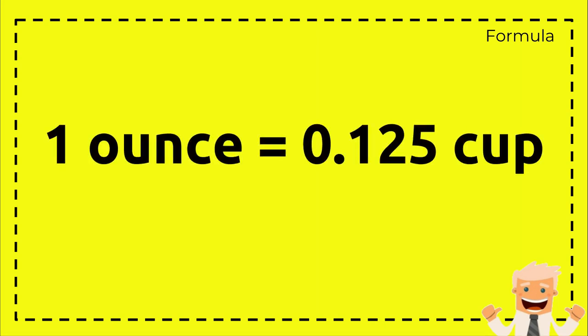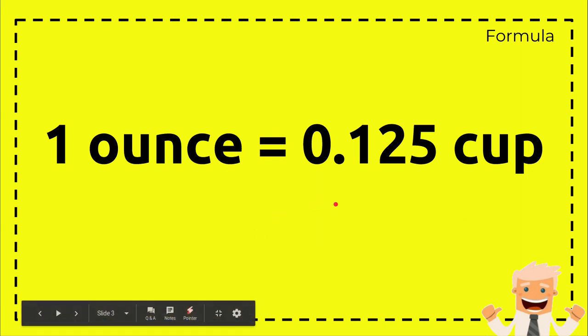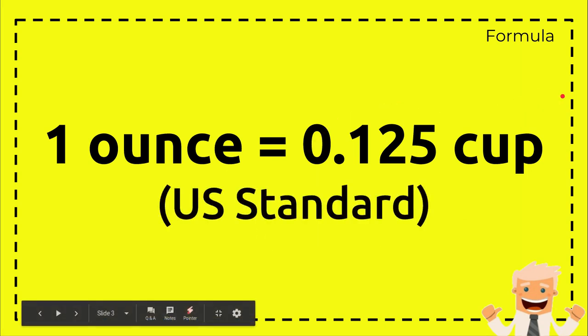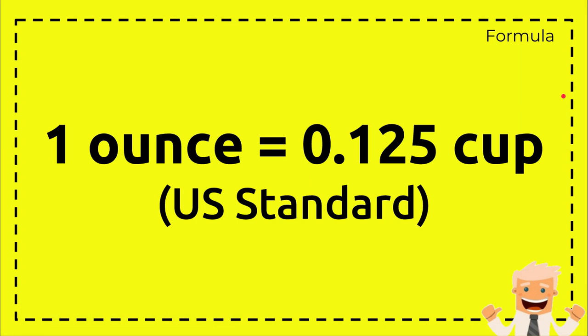Now we are moving to the formula. Before we answer the question we need to know the formula. So we use a U.S. standard for the formula between ounce and cup. So one fluid ounce equals 0.125 cup.